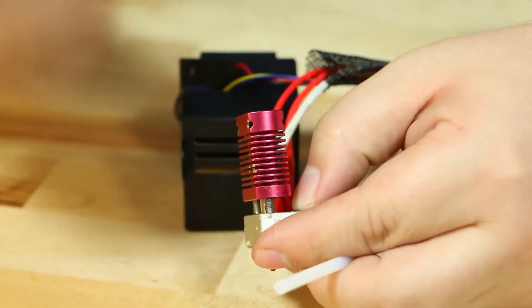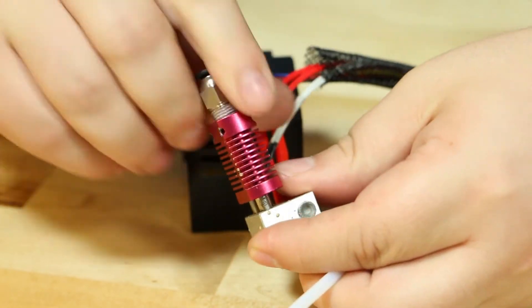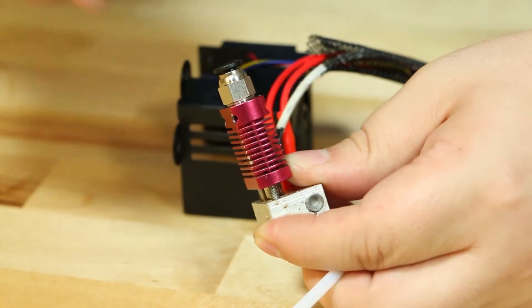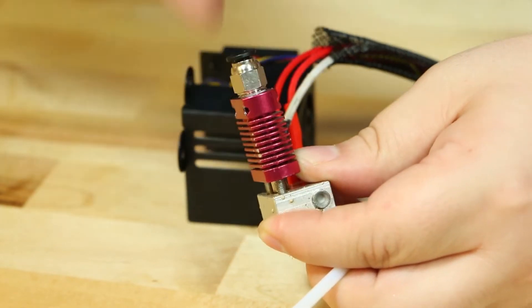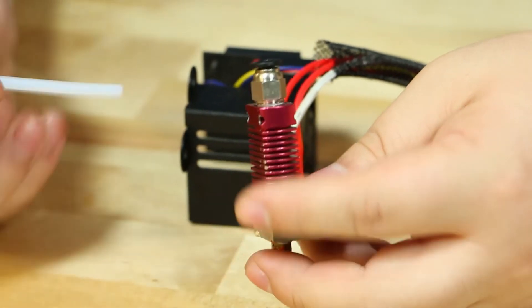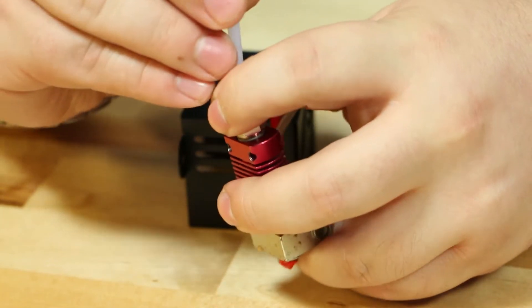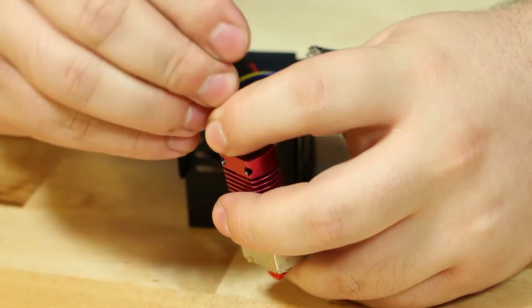Next, head back over to your hot end and place in the new Bowden coupler that came with the kit. Screw it in and then back it out two full turns. Place in your PTFE tube then tighten the coupler all the way in. You may want to use the wrench. This step ensures that there are no gaps internally.